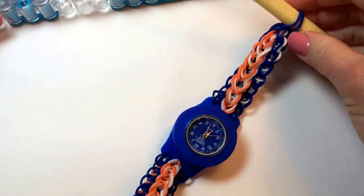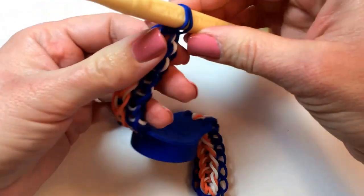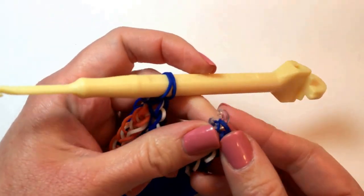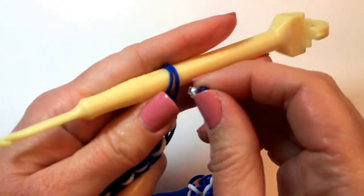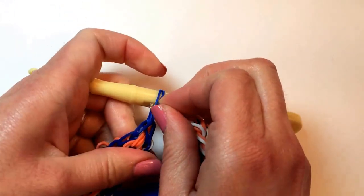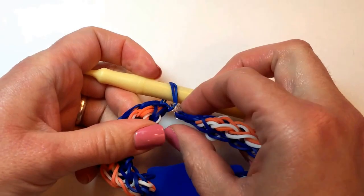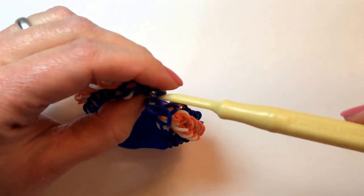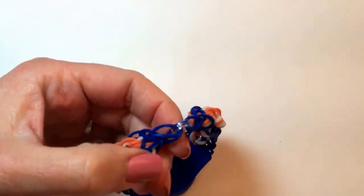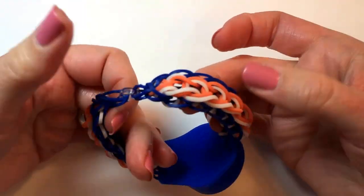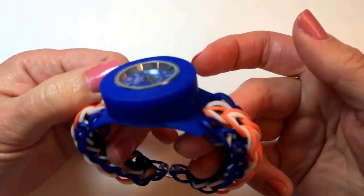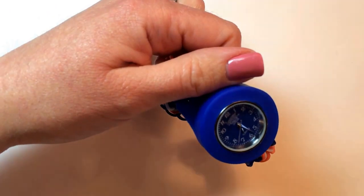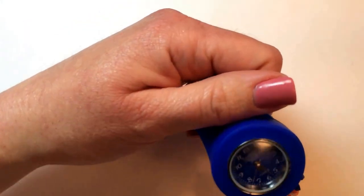And now we want to take our C clip from this side and hook the bands that are here. Make sure you got both of them and then you can slide out your hook. And you've got your very own raindrops pattern Loomy Time watch. I hope you enjoyed making this with me today.